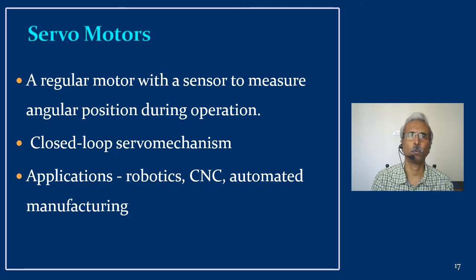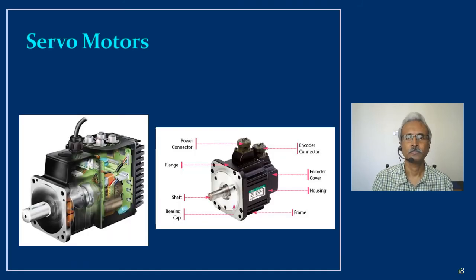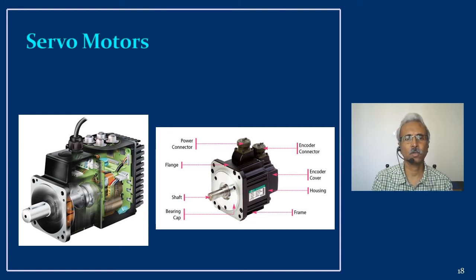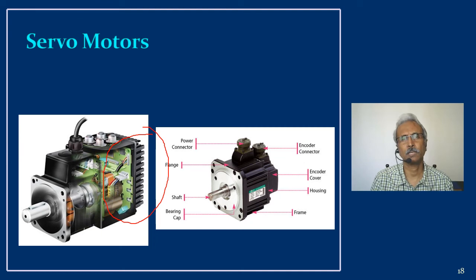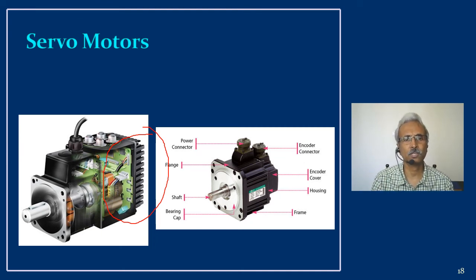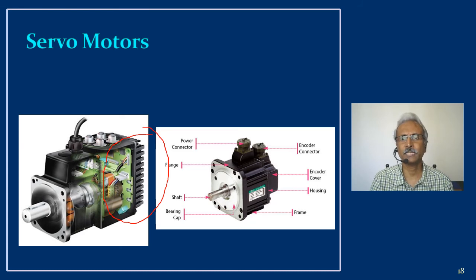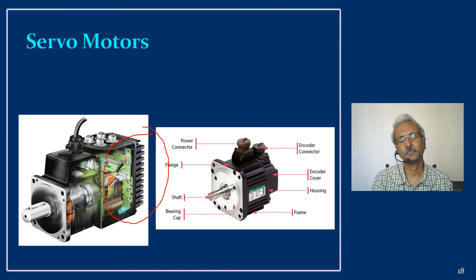The servo motor acts on a closed-loop servo mechanism. Applications include robotics, CNC machines, and automated manufacturing, where servo motors are very widely used. You can see how complex a servo motor is — a normal motor for open-loop applications, like a fan motor or AC induction motor, does not have these circuits or sensors. On the right-hand side you can see the various parts including encoders and housing — that is why servo motors are so effective.